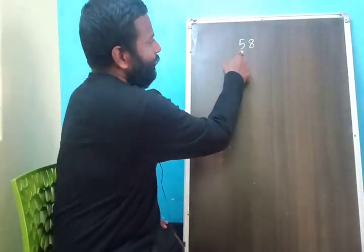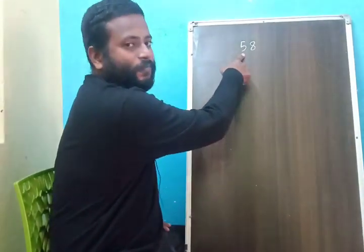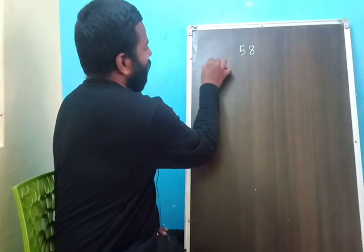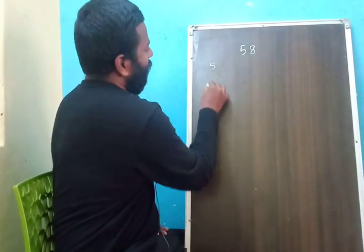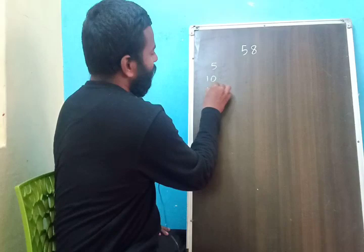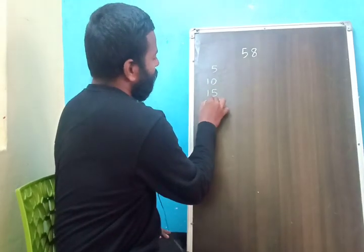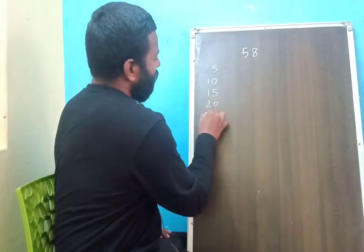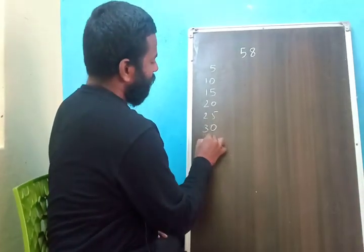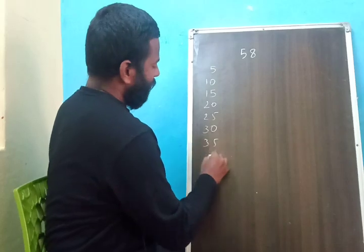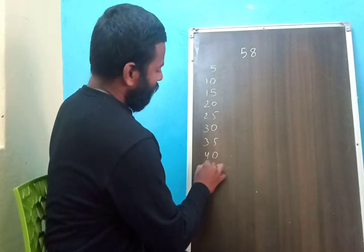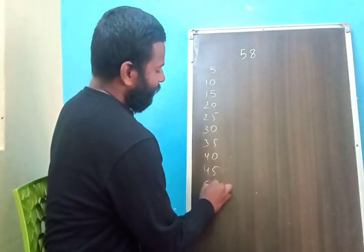First, write the table of 5. So that is: 5 ones are 5, 5 twos are 10, 5 threes are 15, 20, 25, 30, 35, 40, 45, and 50.